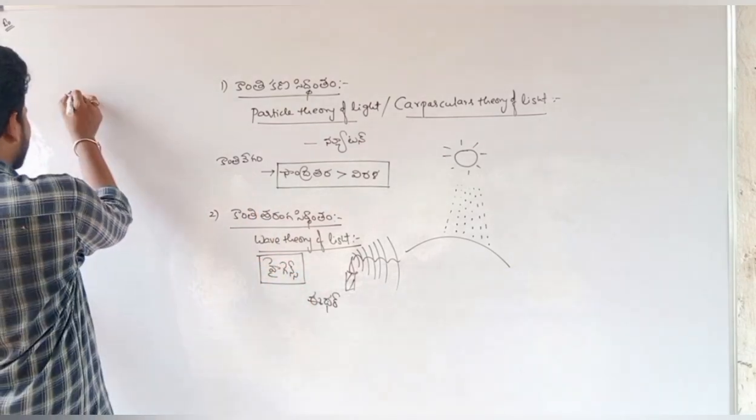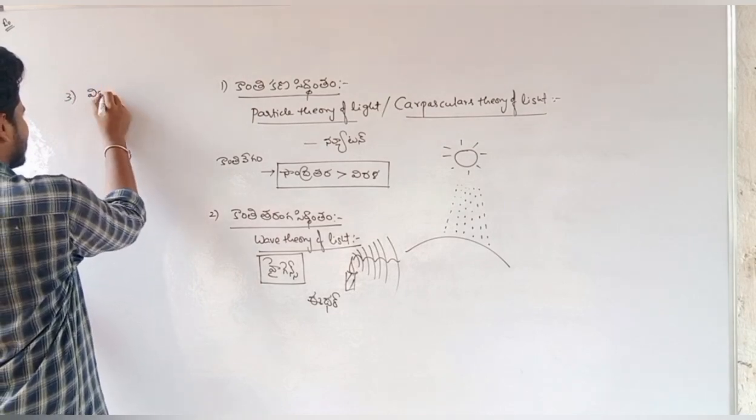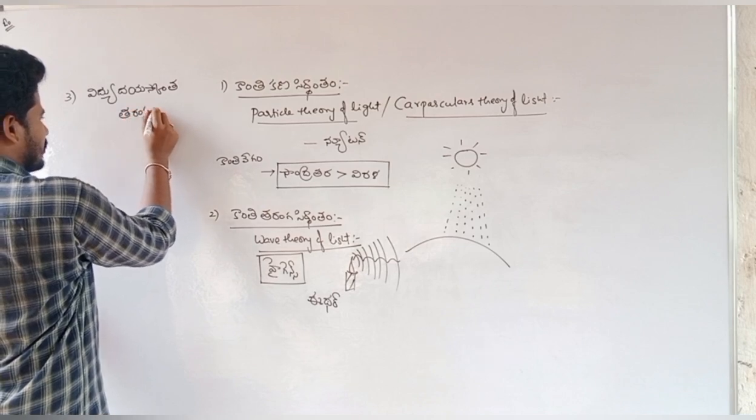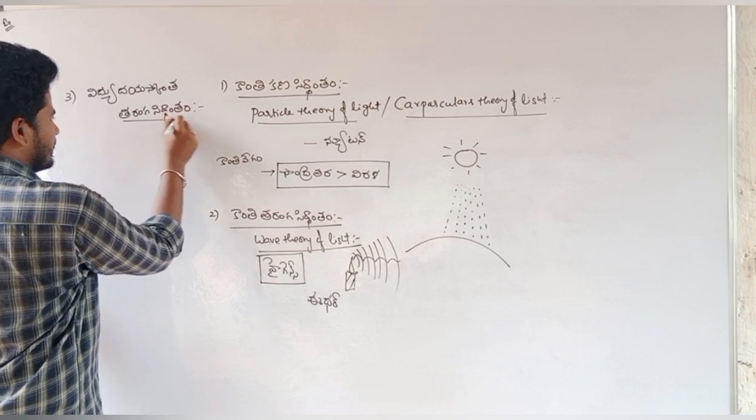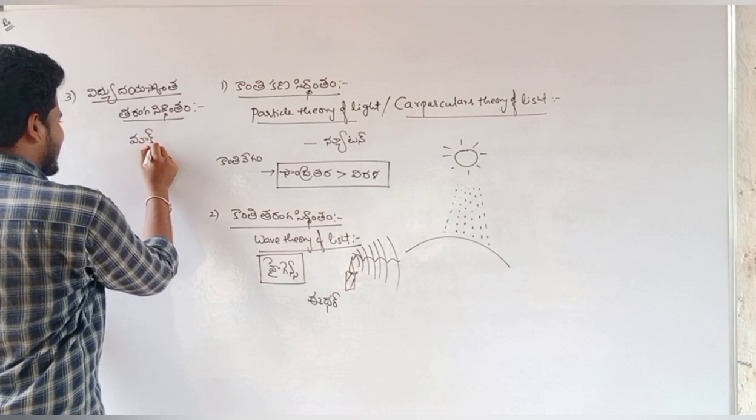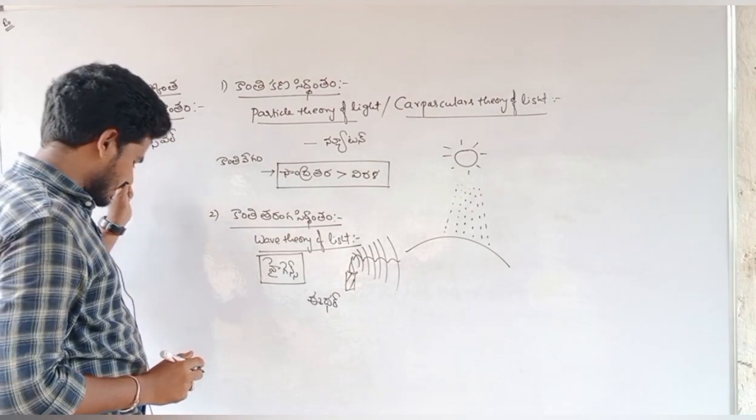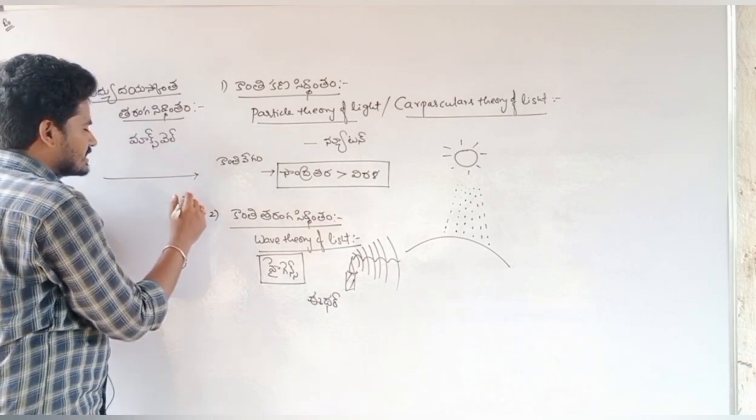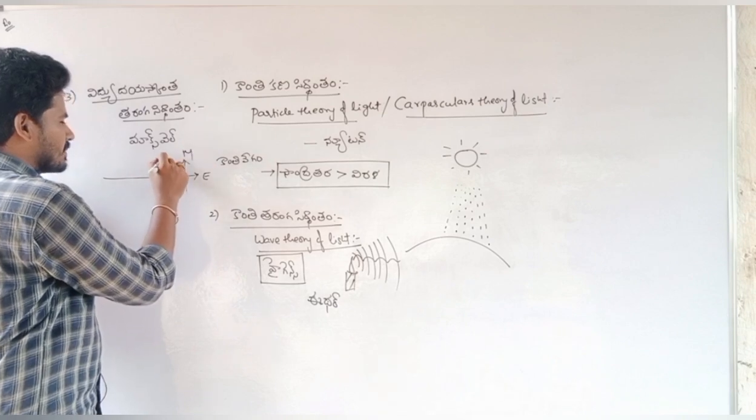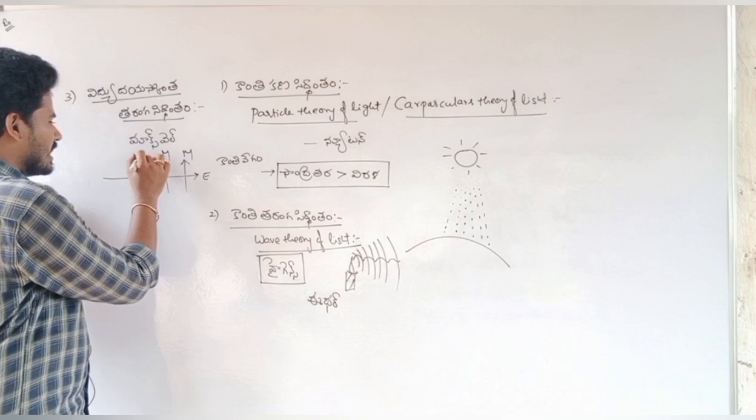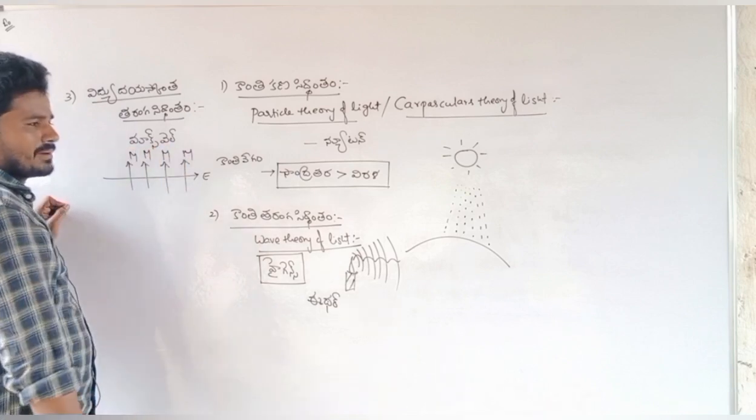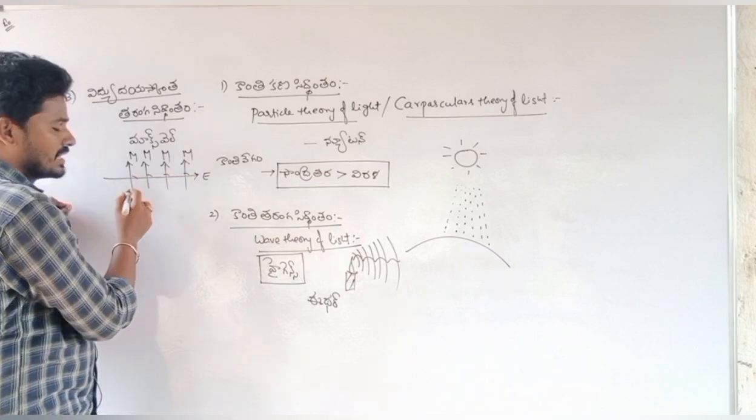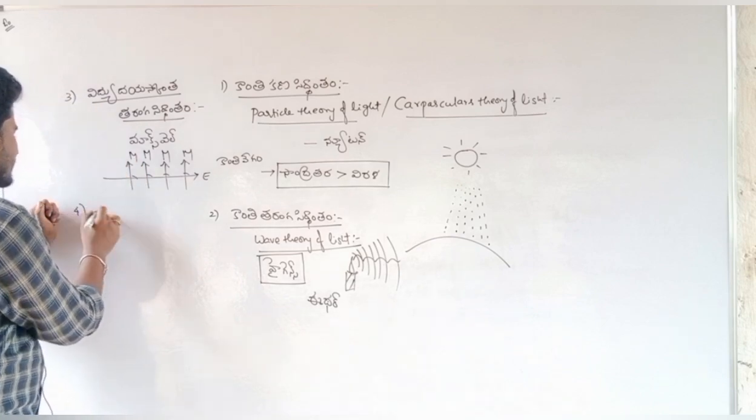Third is electromagnetic wave theory, proposed by scientist Maxwell. According to this theory, light propagates as electromagnetic waves. Light consists of electric and magnetic components perpendicular to each other and perpendicular to the direction of propagation.